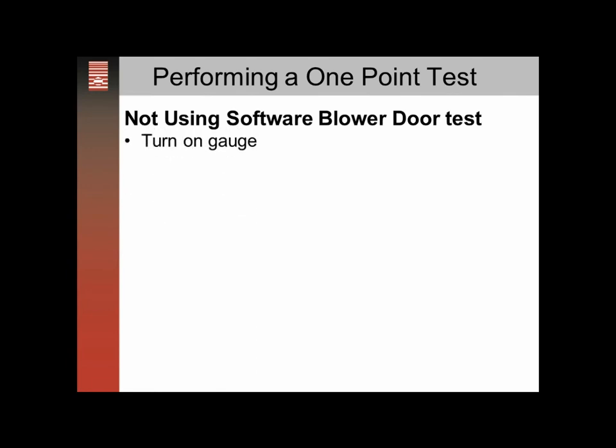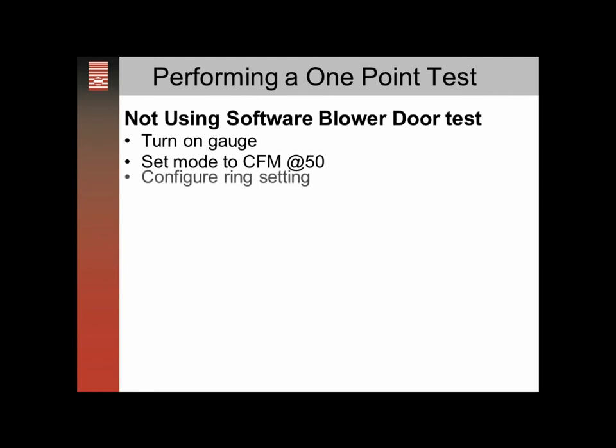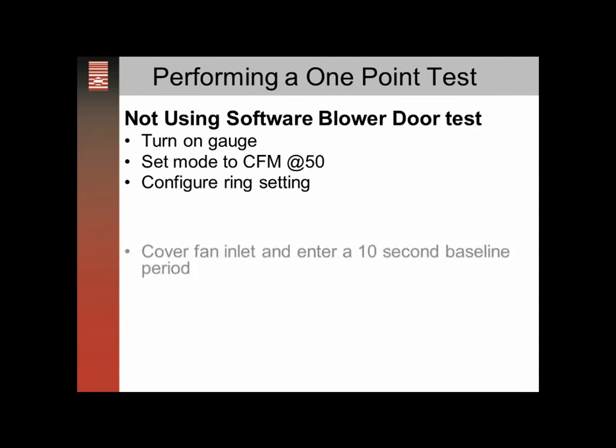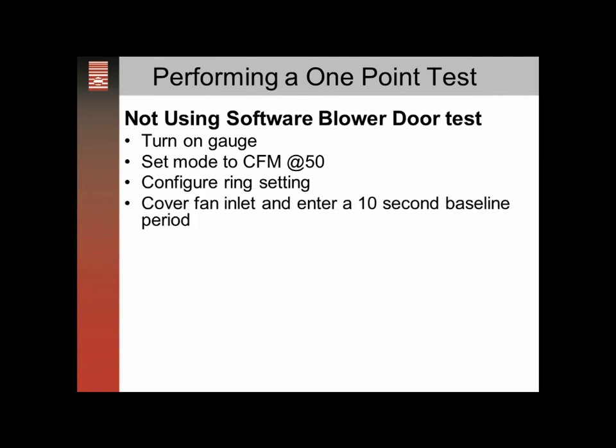If you're not using software, turn on the gauge, set the mode to CFM at 50, configure the ring setting, cover the fan inlet, and enter a 10-second baseline period.